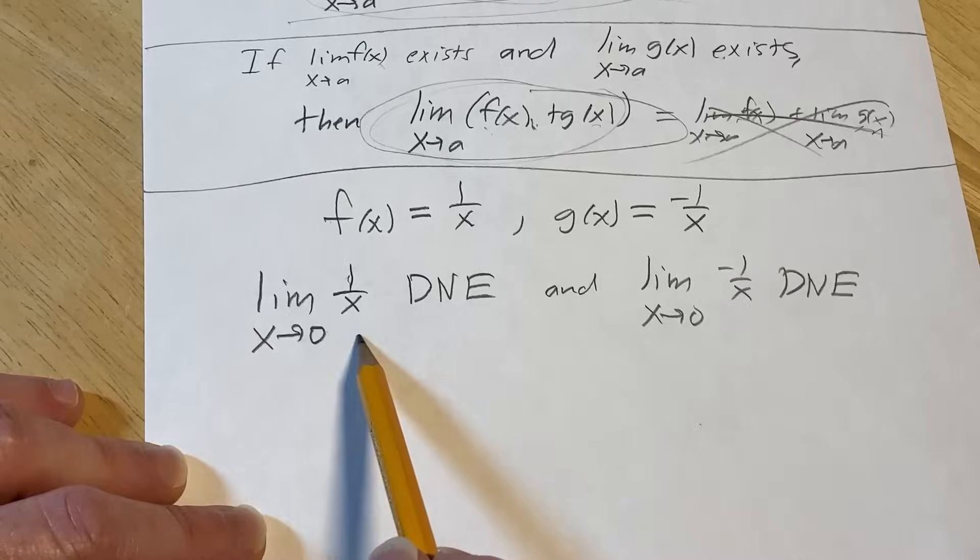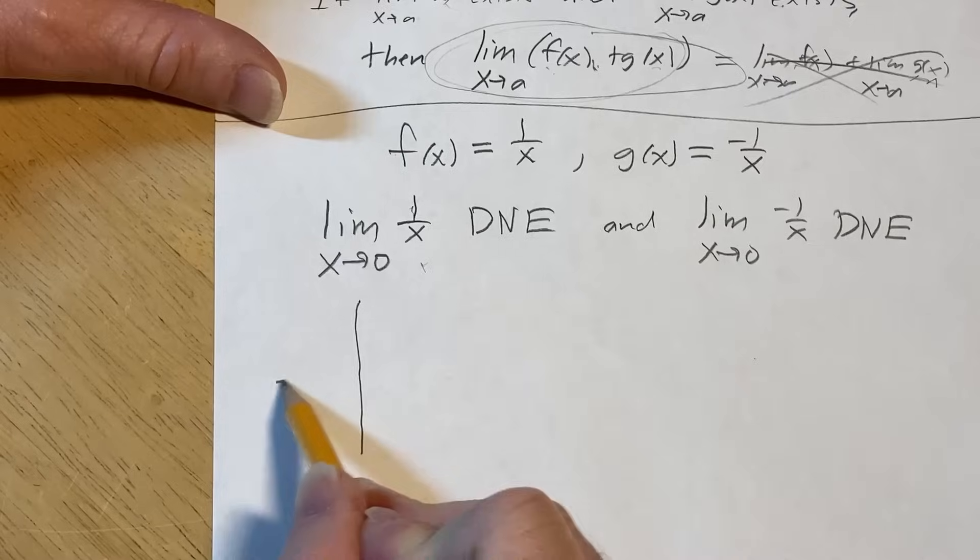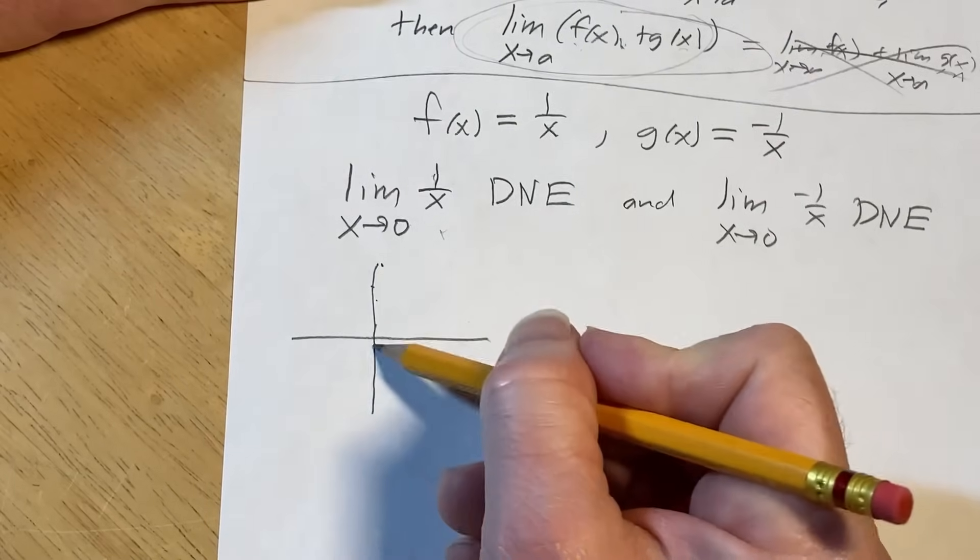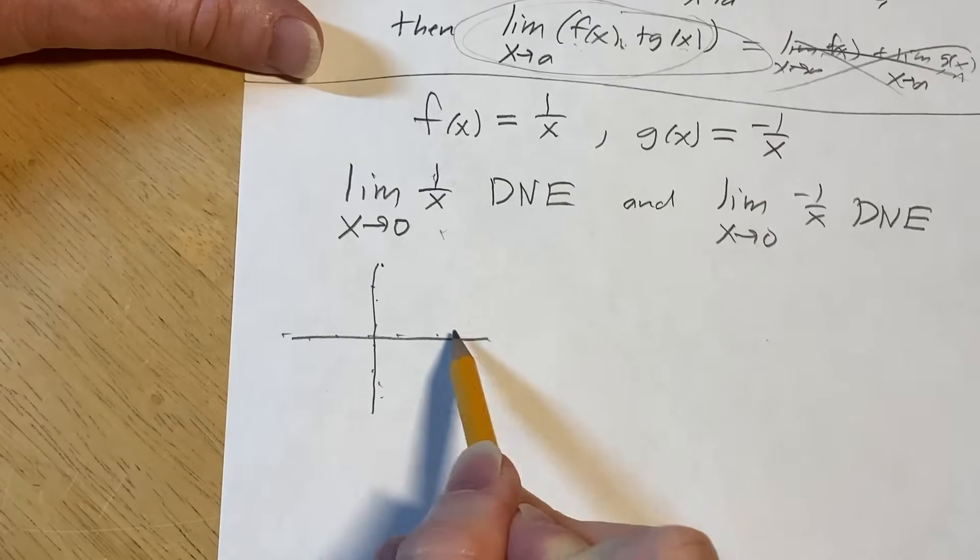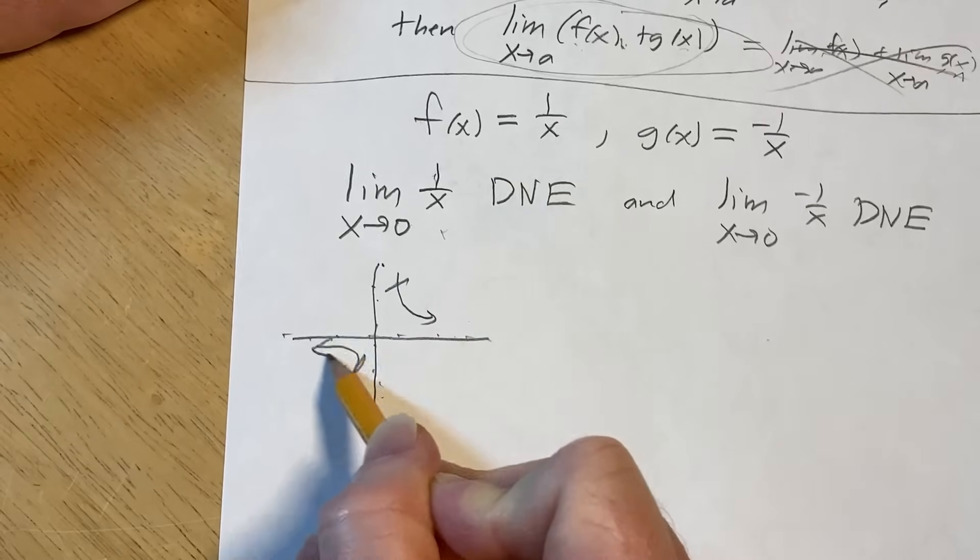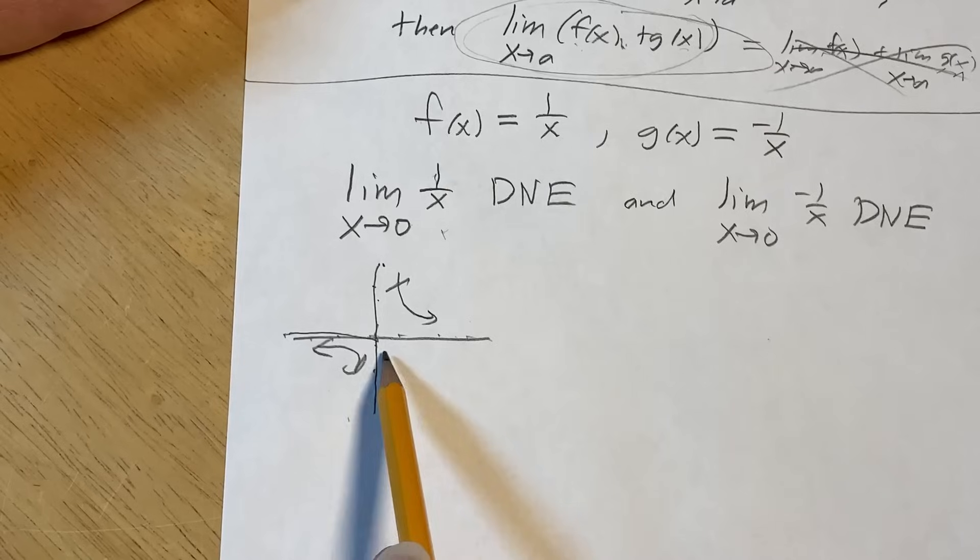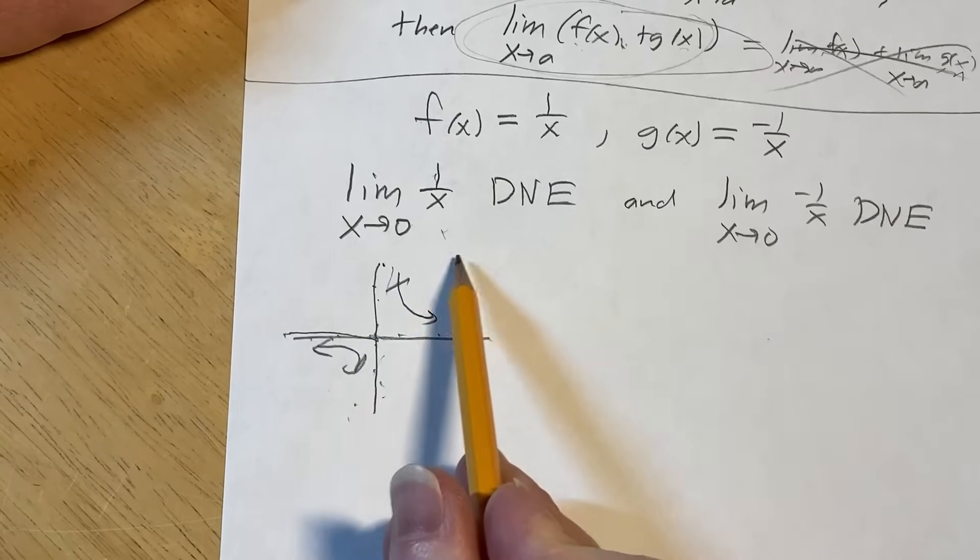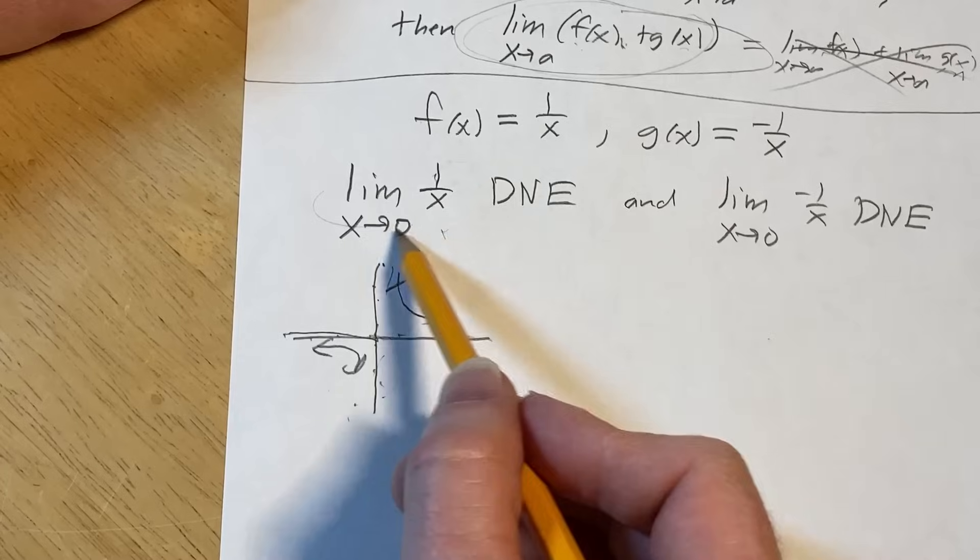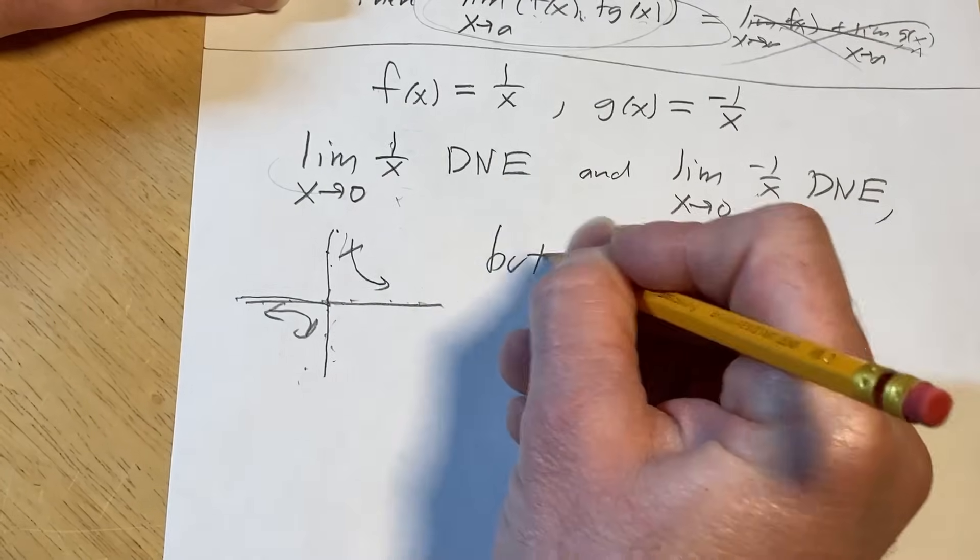Clearly, if you plug in 0, you get 1 over 0. It doesn't make sense. If you look at the graph of 1 over x, it has a vertical asymptote here and a horizontal asymptote here. As x approaches 0 from the left, you get negative infinity because it goes down forever. As x approaches 0 from the right, it goes up forever. So you get infinity. This is not going to make sense.